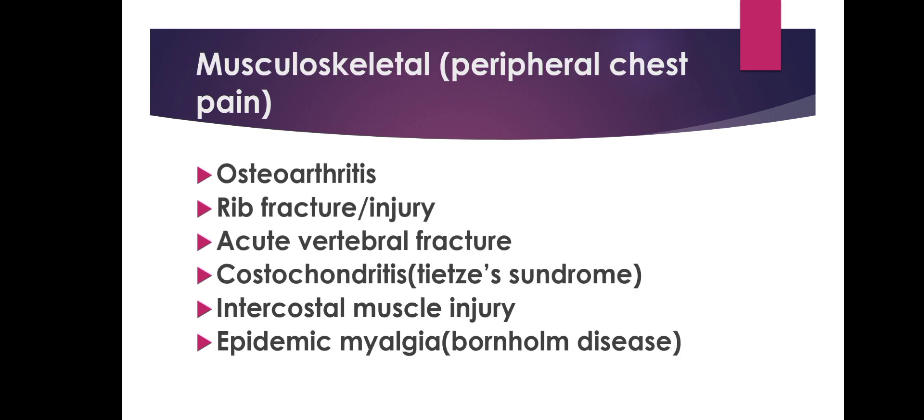Peripheral chest pain due to musculoskeletal problems includes osteoarthritis of the costochondral and costovertebral joints, rib fracture or injury, acute vertebral fracture, costochondritis — also called Tietze's syndrome — intercostal muscle injury, epidemic myalgia, or Bornholm disease. Epidemic myalgia is associated with viral gastroenteritis.